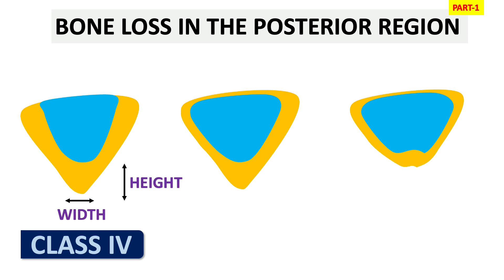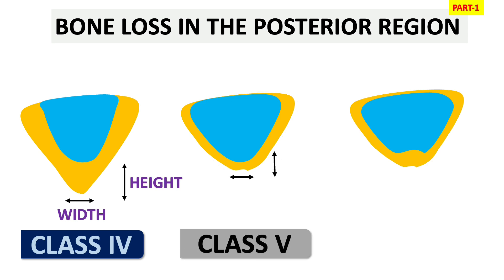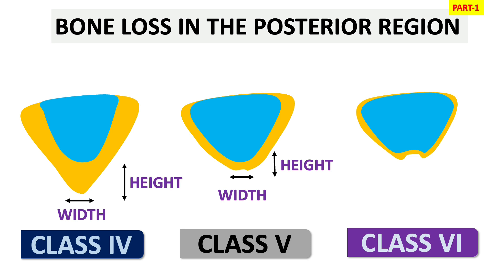In Class 4 we have knife-edge ridges. As you can see in the figure, there is extensive loss in width but some loss in height. In knife-edge ridges we can also construct denture relatively easily. In Class 5 there is extensive loss in height but width is somewhat adequate; some loss in width also occurs due to extensive height loss, and the base of the ridge becomes flat, creating difficulty in denture construction.